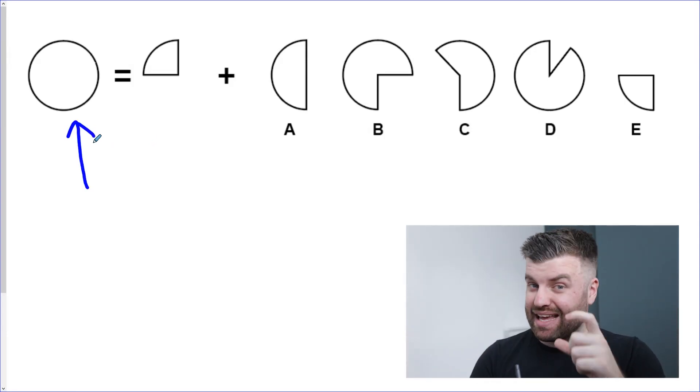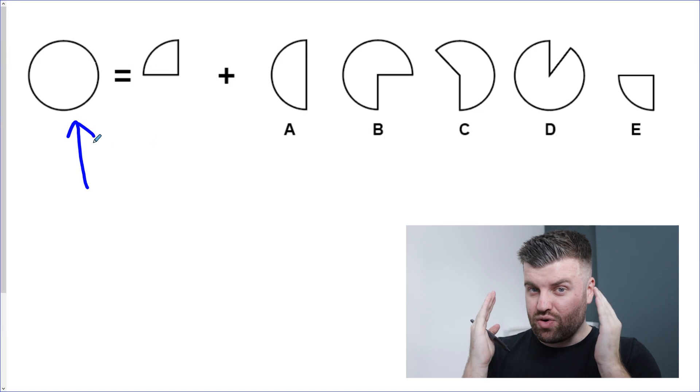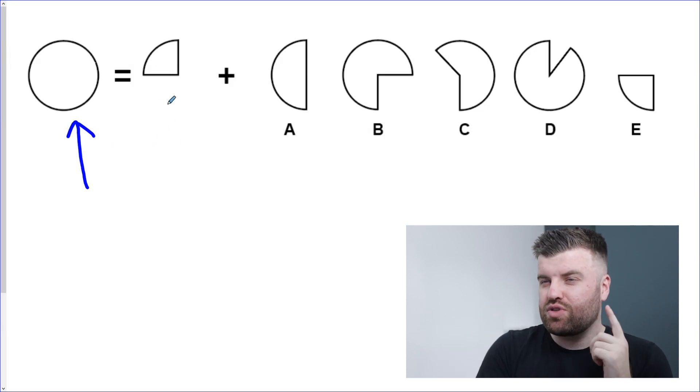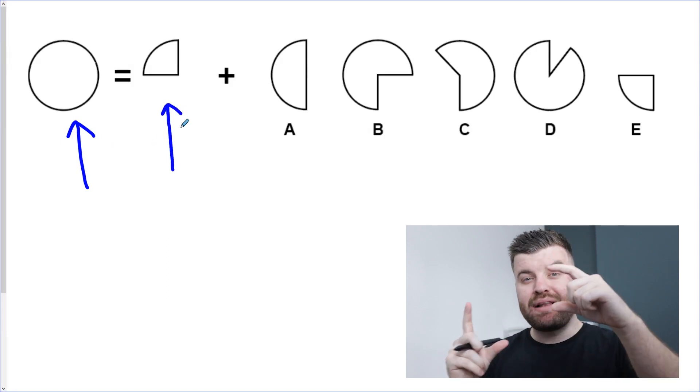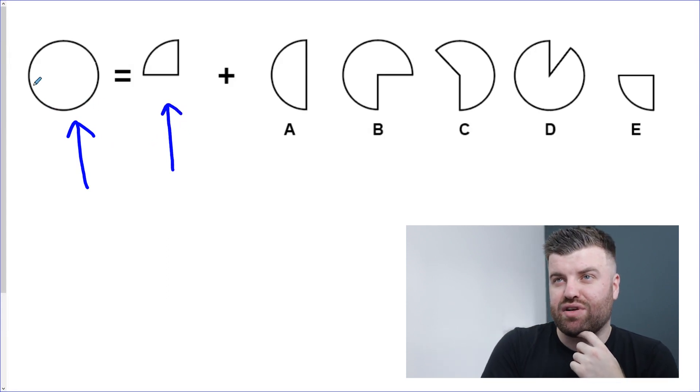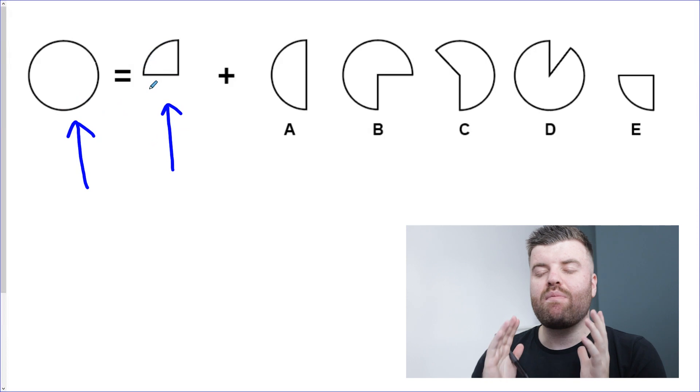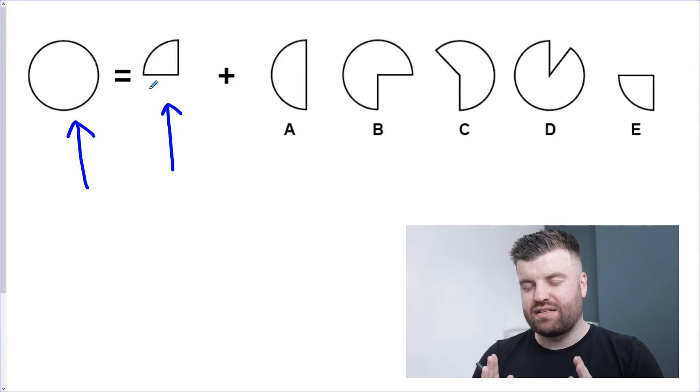Our job is to figure out what must we add to this shape to complete the puzzle and create that original shape on the left. In this question it's a circle, and we're given here a quarter of a circle. Now my favorite technique for this is to do some drawing.